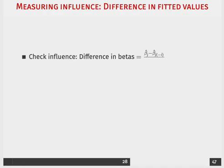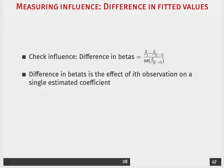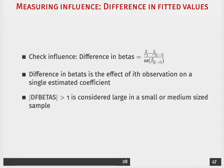So let's try and do that where we're checking the difference in the betas based on running the regression with and without each observation. And the way that we're going to look at the difference is we'll take the difference over the standard error of the beta in the regression without that observation. So the difference in these betas is the effect of the i-th observation on a single estimated coefficient.